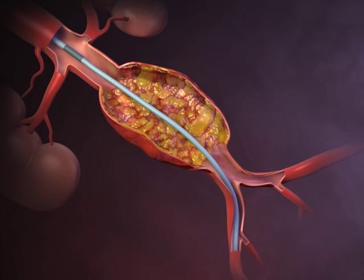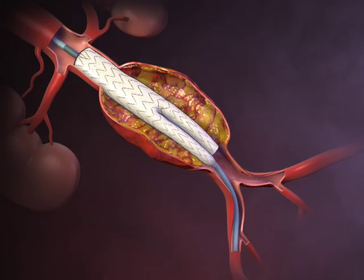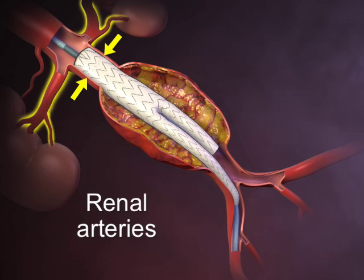The body of the stent graft, composed of a non-permeable polyester material supported by a self-expanding flexible metal frame, is partially deployed with the undeployed upper portion of the device positioned immediately below the renal arteries.